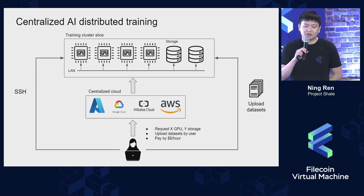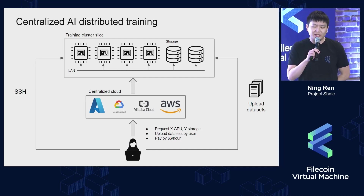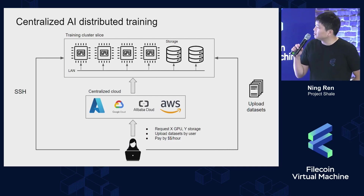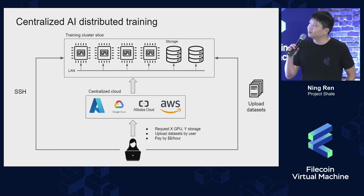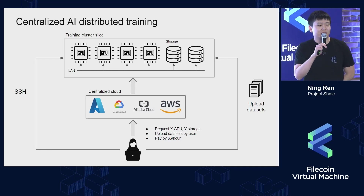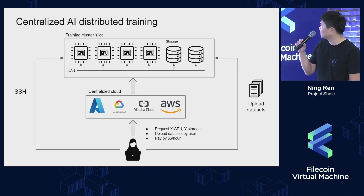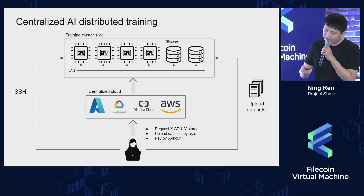The current AI training market is dominated by a few centralized cloud providers like GCP or AWS. Currently, users come to these services and request a training environment which includes accelerators, local storage, and a local network, and then upload their dataset to the environment over the internet.